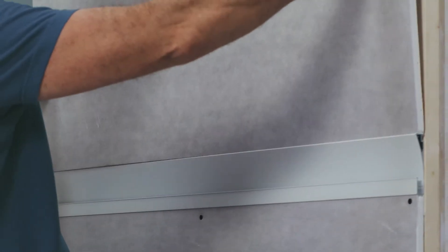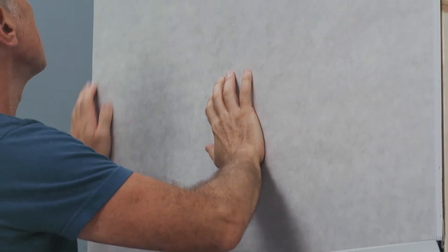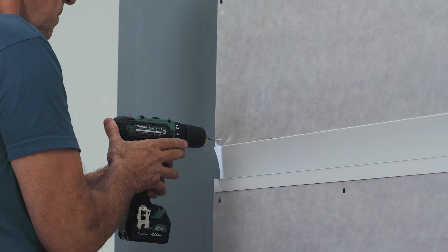Now the drywall panels are placed on both sides of the base plate and screwed to the support structure on the other side.